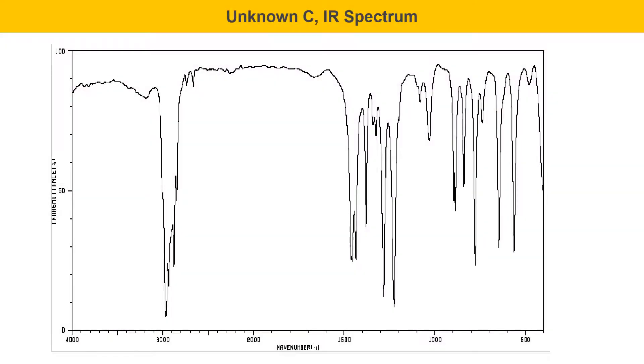Here's the IR spectrum for unknown C, and once again, I'll just remind you to ignore the fingerprint region. What's interesting about this spectrum is just how boring the functional group region is. There's very little going on, and that's an important feature that you need to make sense of.